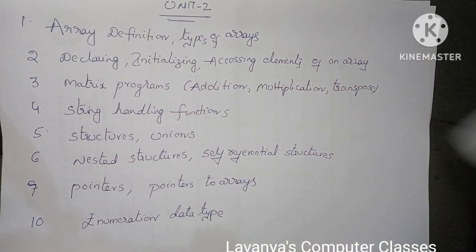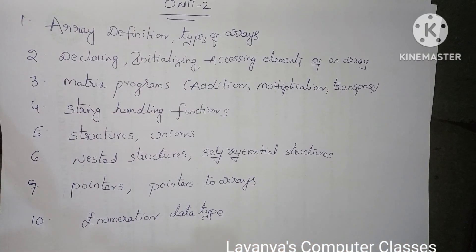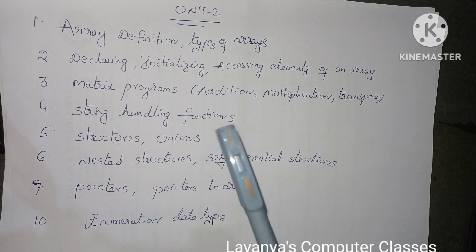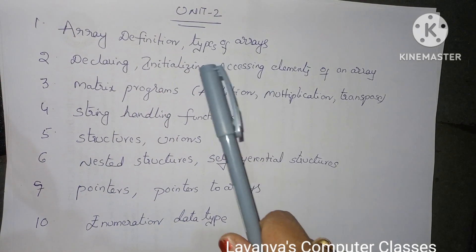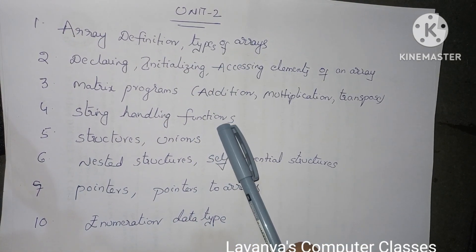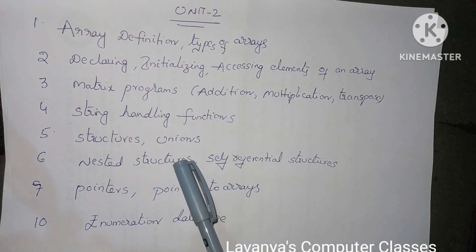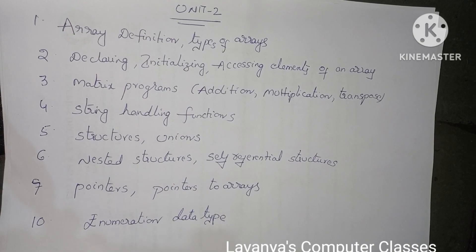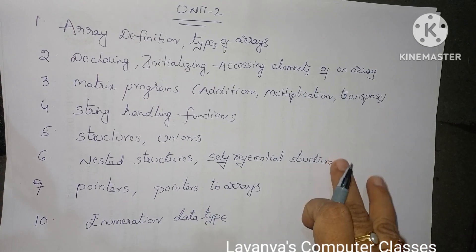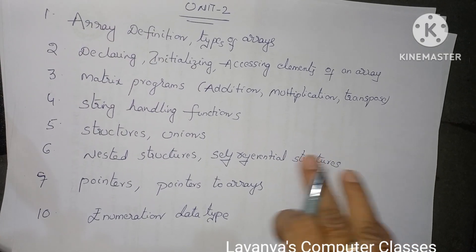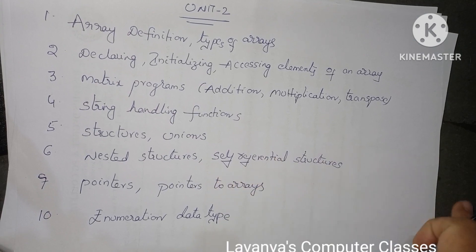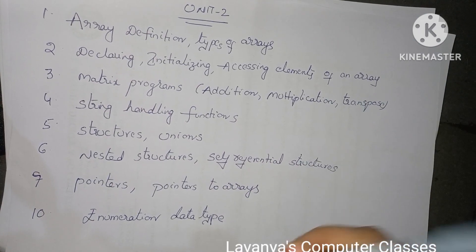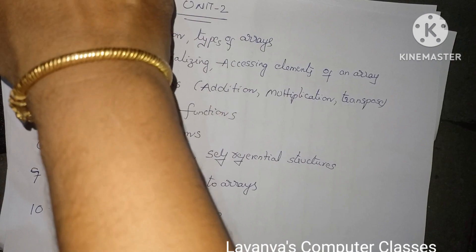Unit 2 important questions: Unit 2 has lengthy concepts with more topics — arrays, string handling, structures, and pointers. The first question is: what is an array? Cover the array definition and explain the different types: one-dimensional array, two-dimensional array, and three-dimensional array.